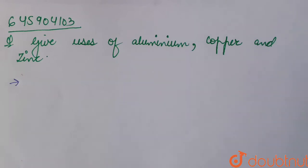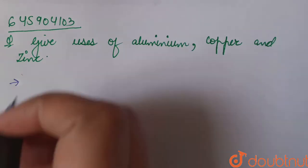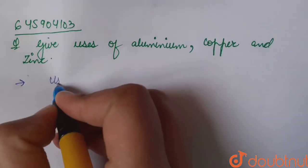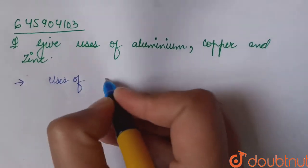The question asks about uses of aluminum, copper and zinc. Let's start with uses of aluminum. The symbol is Al.